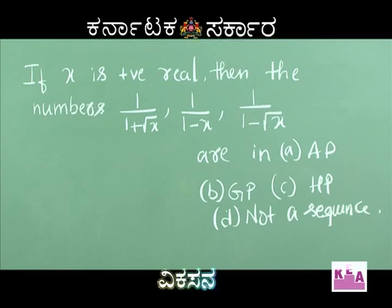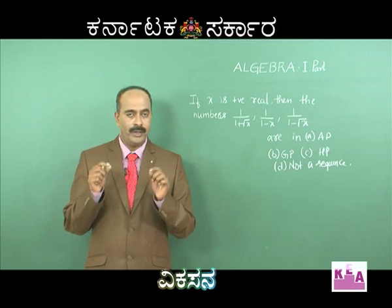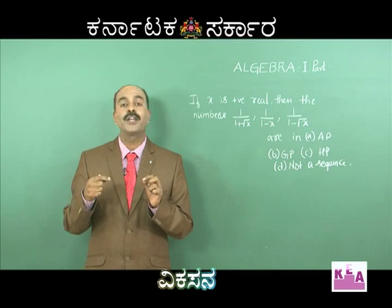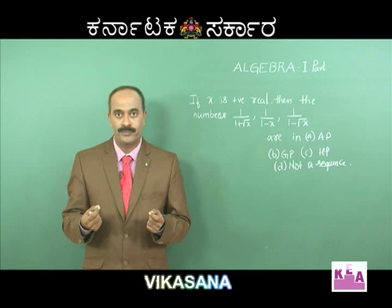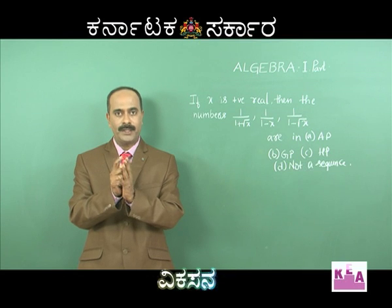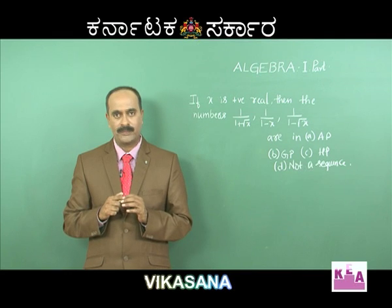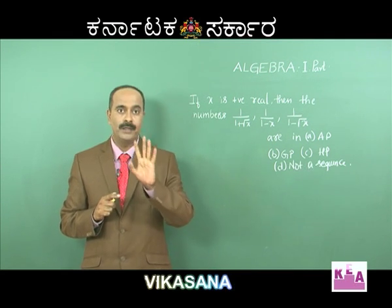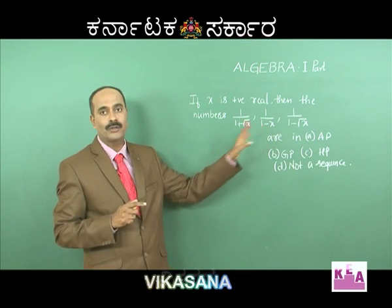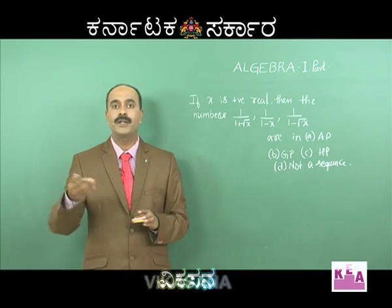If x is a positive real number, then the numbers 1 by 1 plus root x, 1 by 1 minus x, and 1 by 1 minus root x — are they in AP, GP, HP, or not a sequence? Note that x cannot be equal to 1, because if x equals 1, you will get infinity.